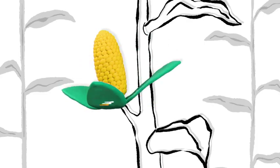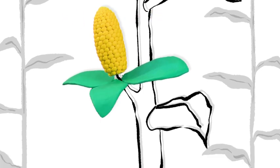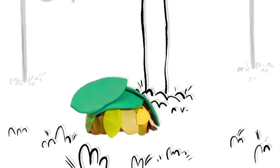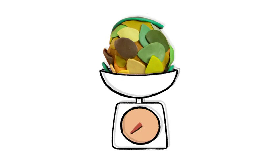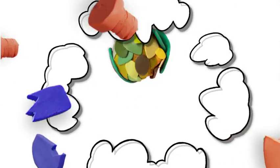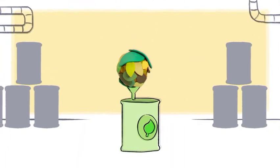Waste plant material from agriculture and forestry is one of the most abundant raw materials on the planet. Every year, the EU produces half a billion tons of leaves, stems and wood scraps. This cheap, carbon-rich material is a promising feedstock for biofuels.